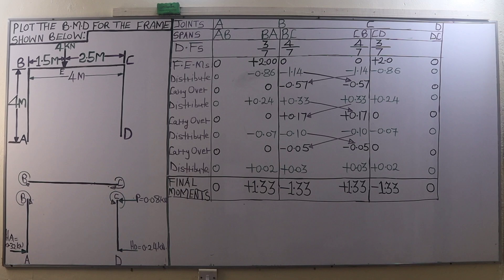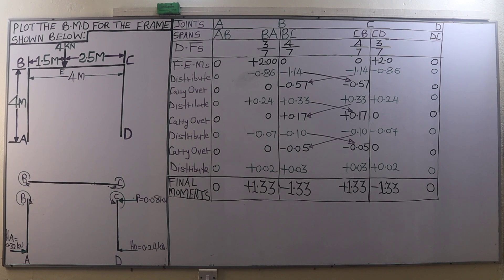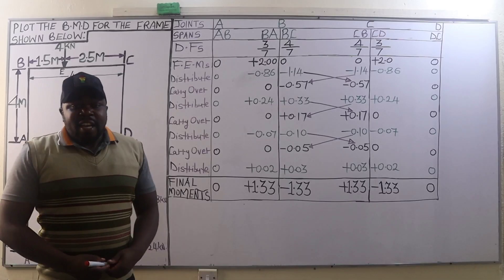Applying a force of 0.08 kN at C will cause some sway moments at joints B and C of the bottom frame. The fixed joints B and C are going to sway because of that application of a horizontal force at C of 0.08 kN. So what we are going to do is calculate or assume some arbitrary moments at B and C in a certain ratio, and then distribute those to the other joints.